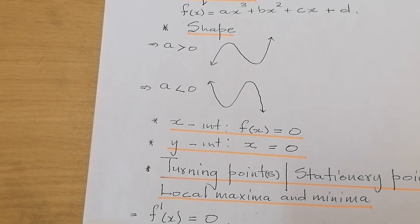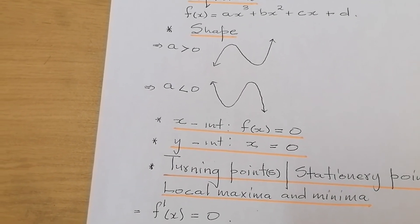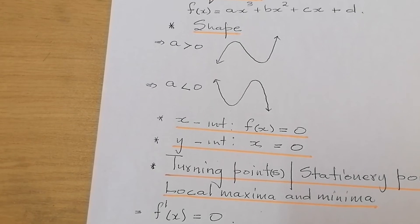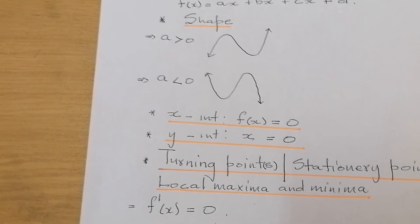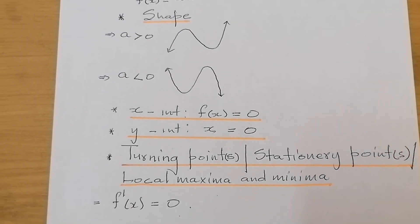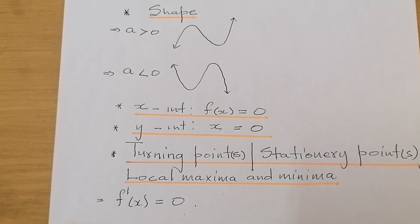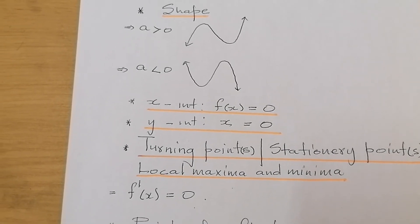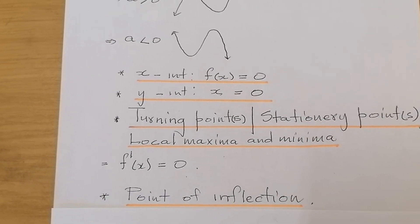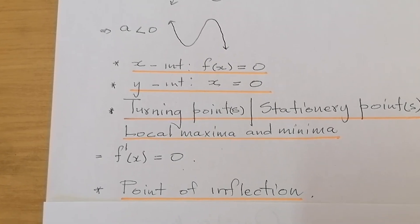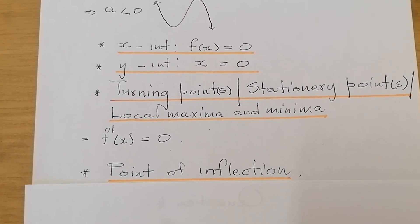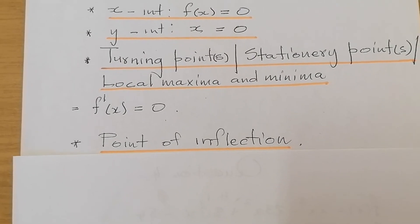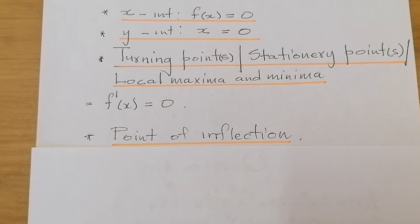Now, we know the shape. We know the x and the y-intercept. We know local minima and local maxima. What else do we want to know? We need to know the point which is referred to as the point of inflection. What is the point of inflection?